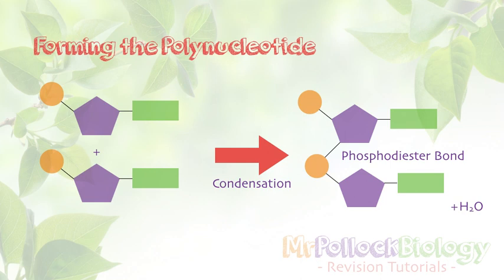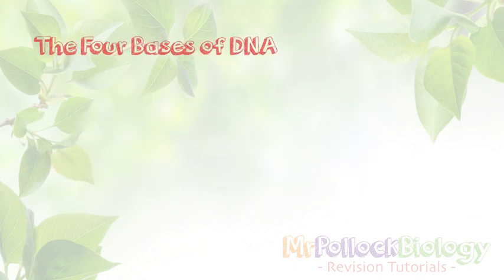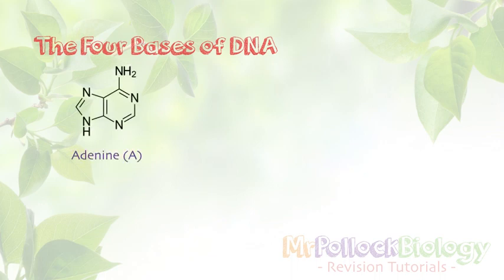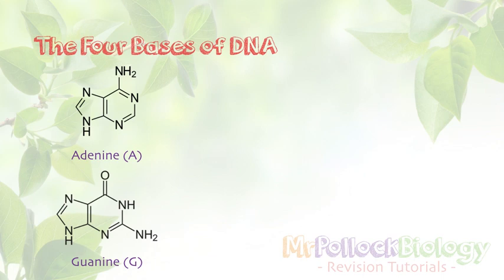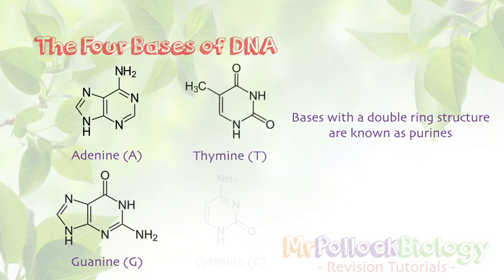We need to consider the four different bases that can be found in these nucleotides. The first two are adenine, given the letter A, and guanine, given the letter G. Because these have a double ring structure, they are categorised separately — they are called purines. The other two bases, thymine and cytosine, only have a single ring structure, and they're called pyrimidines.